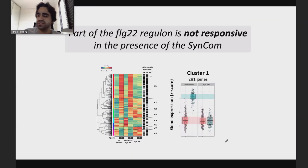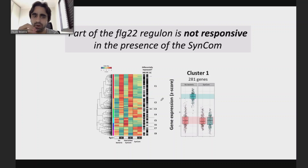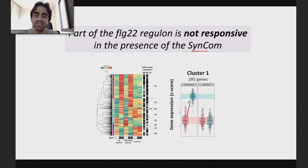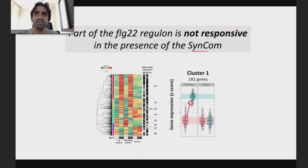As a summary of this first part: part of the flg22 regulon is not responsive in the presence of this synthetic community — specifically cluster one, the defense-related genes. In other words, here we establish that the plant microbiome can suppress the plant immune system.